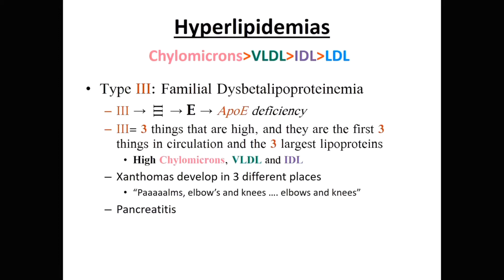Type 3 is familial dysbetalipoproteinemia — my favorite. The mnemonic: flip the Roman numeral III on its side and add a line to get an 'E,' representing ApoE deficiency. ApoE is required for the first three and largest lipoproteins in circulation. So three things are elevated: high chylomicrons, high VLDL, and high IDL.